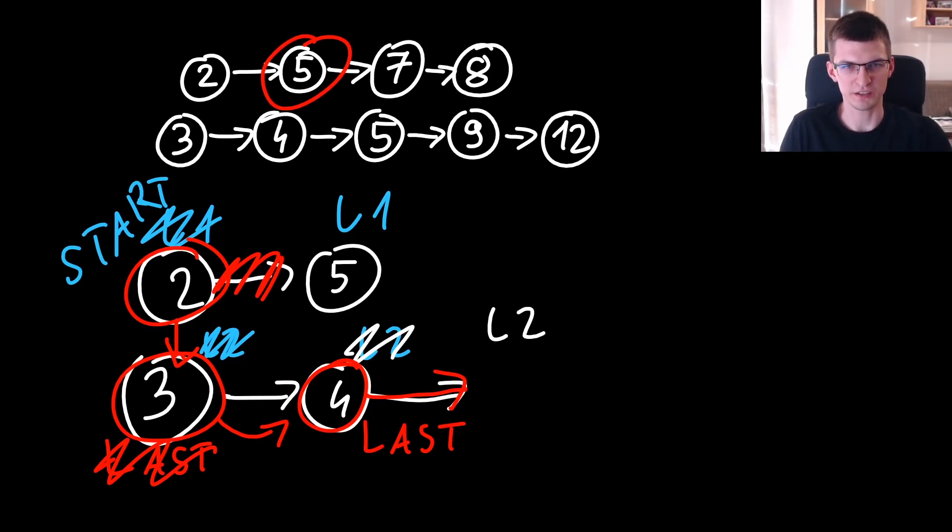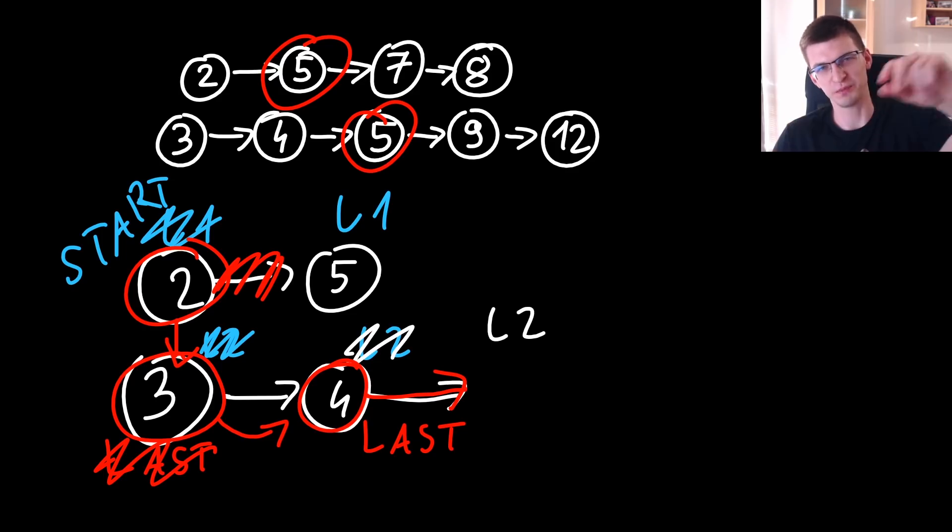There can be ties by the way. There is tie between 5 and 5 and then it doesn't matter how we decide it. The combined list can be 4, 5, 5 or it can be 4, 5, 5. The values will match.